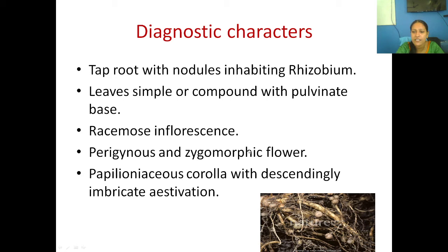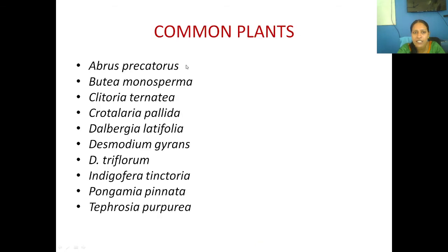The stamens are generally 10, in monadelphous or diadelphous condition. Monocarpellary with ovules in marginal placentation, and the fruit is a legume. These are the characters of Papilionoideae members. Common plants include Abrus precatorius, Butea monosperma, Clitoria ternatea, Crotalaria, Desmodium, and Indigofera species.